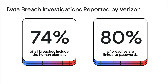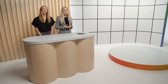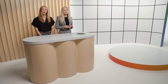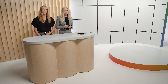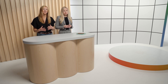In the data breach investigation report by Verizon, they stated that social engineering attacks are often very effective and extremely profitable for cyber criminals. 74% of all breaches include a human element, and 80% of breaches are linked to passwords. And for all developers, managing identities can be extremely challenging as well. Getting correct and complete contact information from your users, verifying an email address, and preventing duplicate accounts, while ensuring a high bar for user privacy, are all significant challenges.